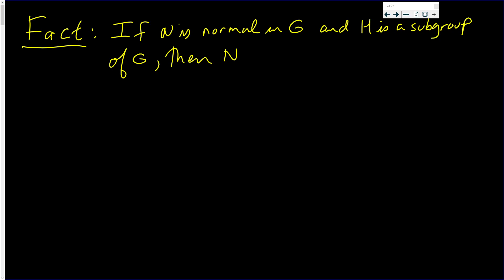In this video, we're going to prove the following fact. If N is a normal subgroup in G, and H is just a subgroup of G, then NH is a subgroup of G.